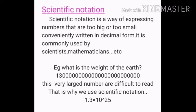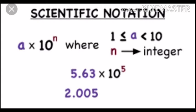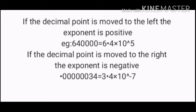The scientific notation formula is written as a × 10^n — that is, a coefficient multiplied by 10 raised to an exponent n. The value of a must be non-zero, where a is between 1 and 10, and n can be positive or negative.